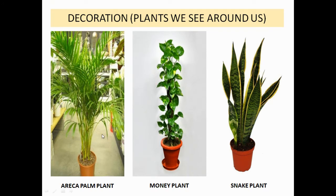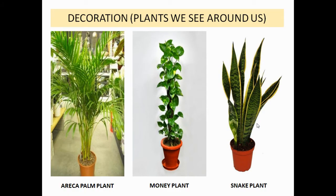We also use plants for decoration. We keep plants inside our house for decorating. These plants give us a lot of oxygen and increase the oxygen content in our surroundings — like areca palm, money plant, and snake plant. We keep them inside our house to increase the amount of oxygen as well as for decoration.